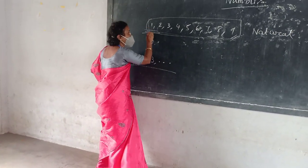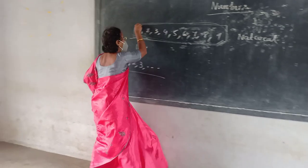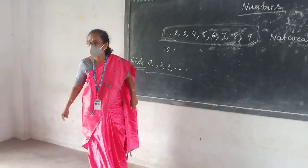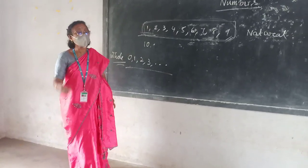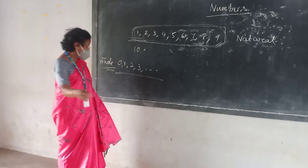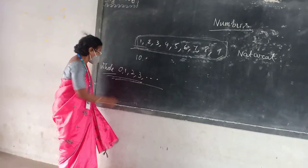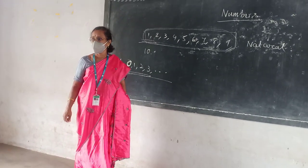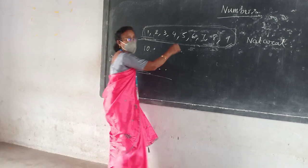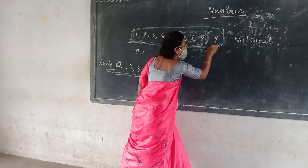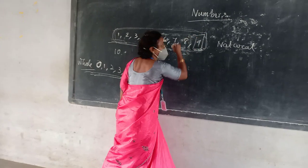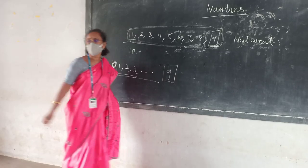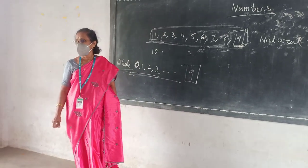While you are talking about natural, the smallest single digit number is 1. When you are saying about whole numbers, the smallest number is zero. So the biggest single digit number is nine. Here also the biggest single digit number is nine. Do you follow?